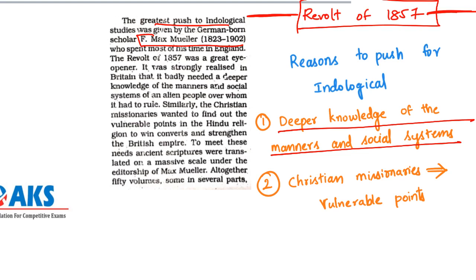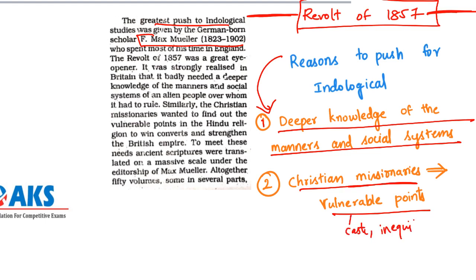Not only administration, but Christian missionaries also wanted to find out the vulnerable points in Hinduism — showing weak points like the caste system and social inequalities — so they could convert Hindus to Christianity. Because of these two reasons, they started translating all ancient scriptures on a massive scale, under the editorship of Max Muller.